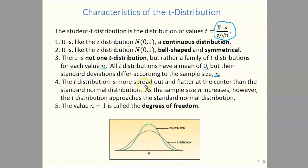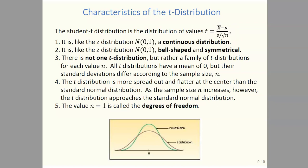The t distribution is more spread out and flatter — it has more variation than the standard normal distribution. However, as the sample size n increases, the t distribution approaches the standard normal distribution. The value n minus 1 is called the degrees of freedom for a student t distribution. Now let's take a look at a graphic comparing the student t distribution to the standard normal distribution to see what we mean.